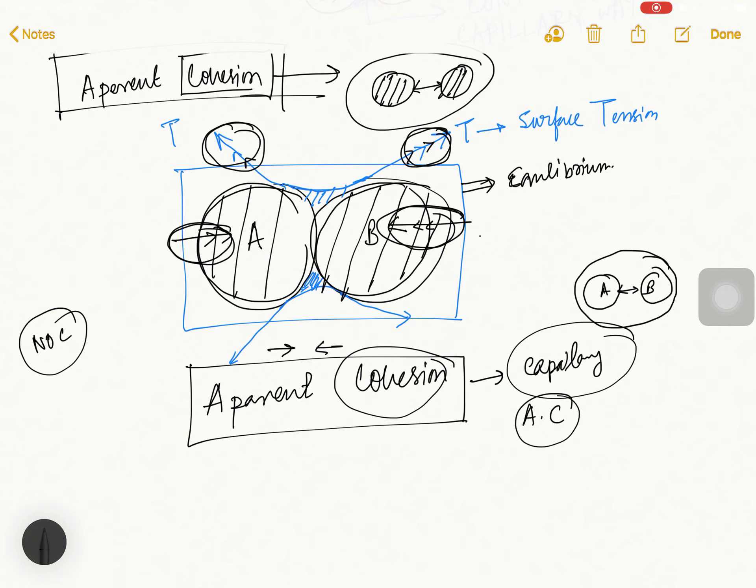तो मानलो you want to write the definition. तो आप simple language में यह लिख सकते हो: due to capillary action between two adjacent soil particle there should be water and due to water they are staged, there create a surface tension and maintaining the equilibrium, two particles comes to each other and this phenomenon known as the apparent cohesion.